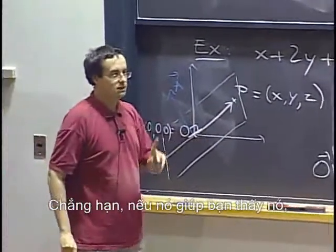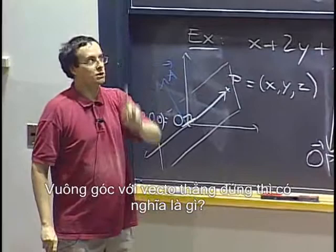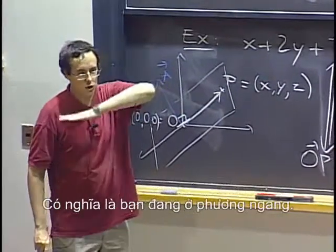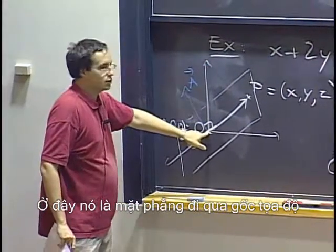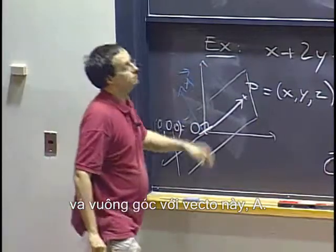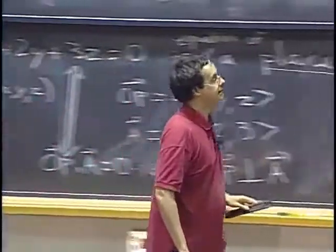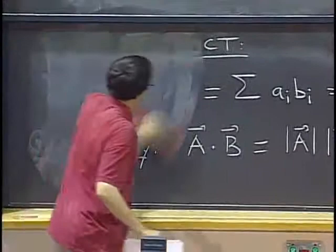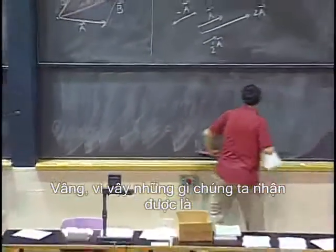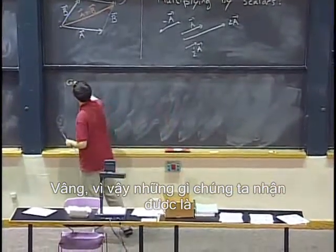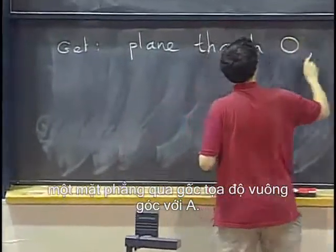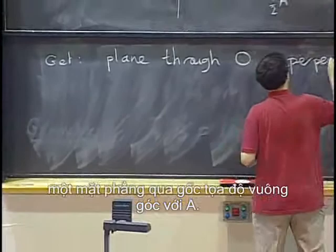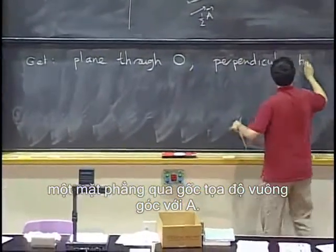For example, if it helps you to see it, take a vertical vector. What does it mean to be perpendicular to the vertical vector? It means you are horizontal. It's the horizontal plane. Here, it's a plane that passes through the origin and is perpendicular to this vector A.